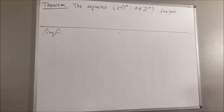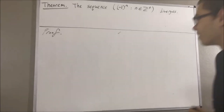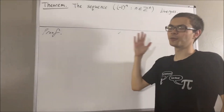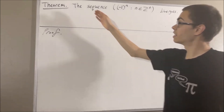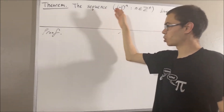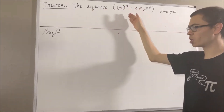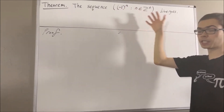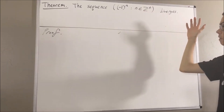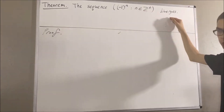Hello! In this video, we are going to prove the following theorem. The sequence which goes negative 1, 1, negative 1, 1, negative 1, and so on and so forth, diverges.